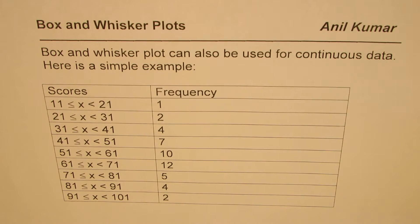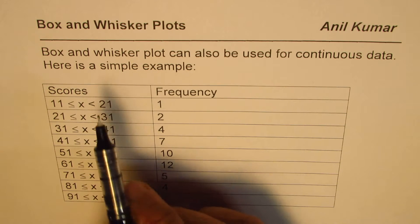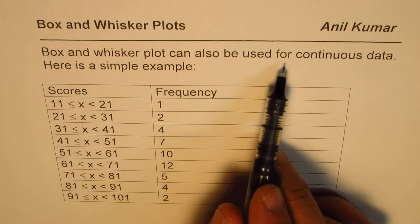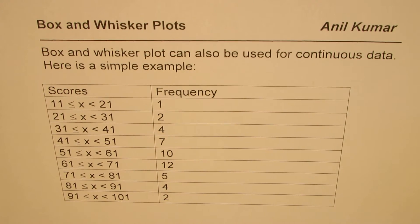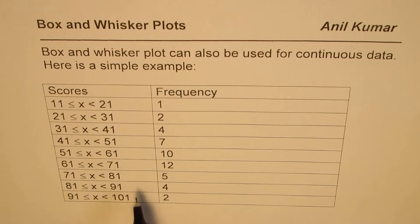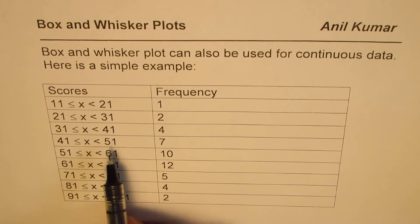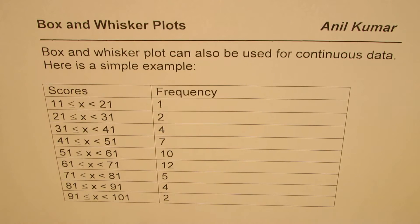I'm Anil Kumar sharing with you a very important video on box and whisker plots. This question is from a previous test paper. I'd like you to pause the video, copy the question, try the solution, and then look into my suggestions. Box and whisker plots can also be used for continuous data — normally we have been plotting them for discrete data. In this example we have continuous data, and we are going to plot a box and whisker diagram for it.